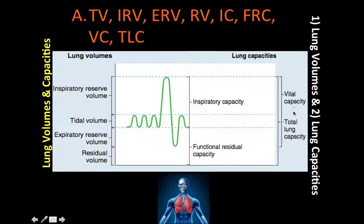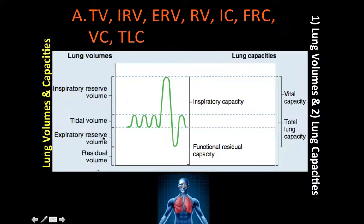Vital capacity is the sum of tidal volume, inspiratory reserve volume, and expiratory reserve volume — it's the volume of air that can be forcefully expired after maximal inspiration. Total lung capacity is the sum of all four lung volumes, representing the volume of the lungs after maximal inspiration. Since it includes residual volume, it also cannot be measured by spirometry.